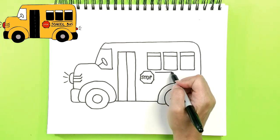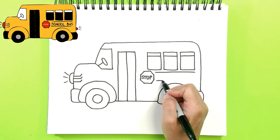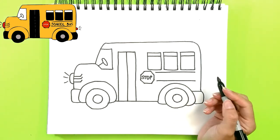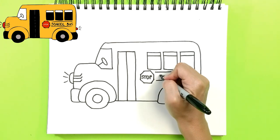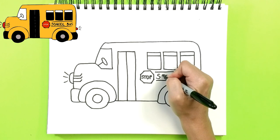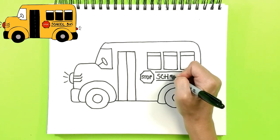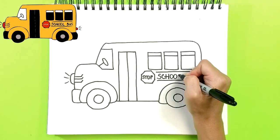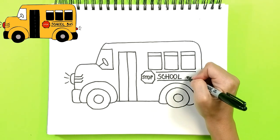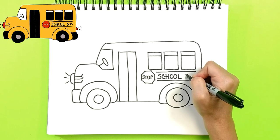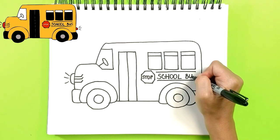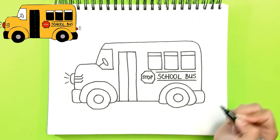And let's draw two lines. And in between them, let's write 'school bus' so there is no mistake this is a school bus. S-C-H-O-O-L, and B-U-S. School bus.